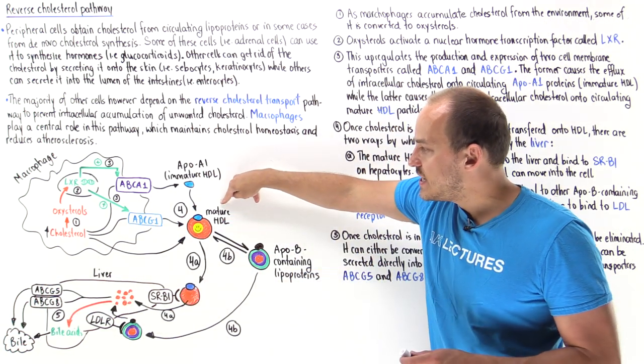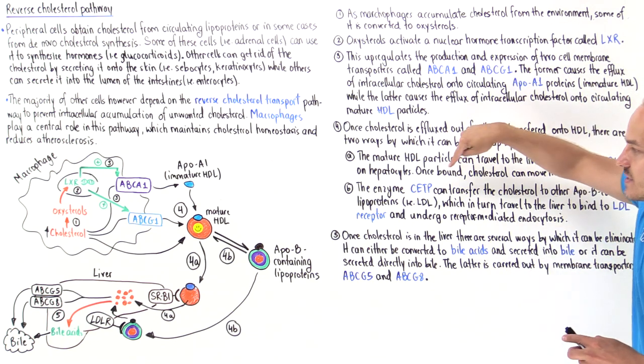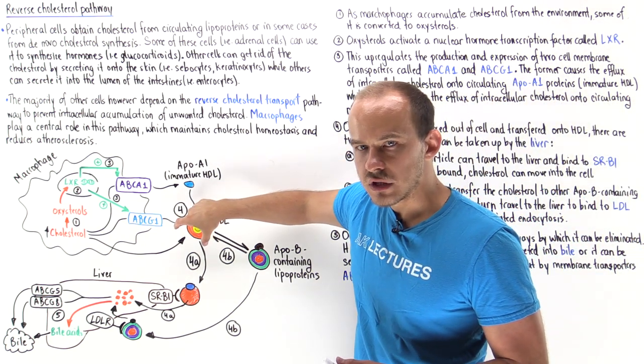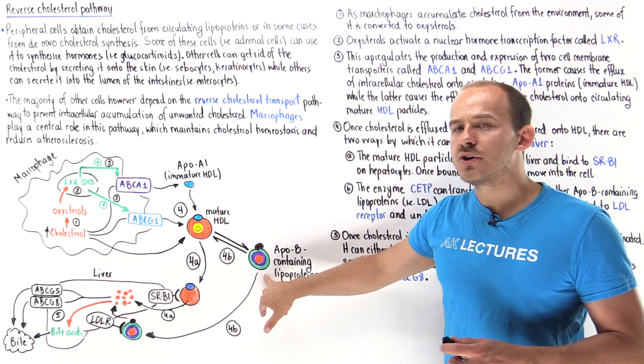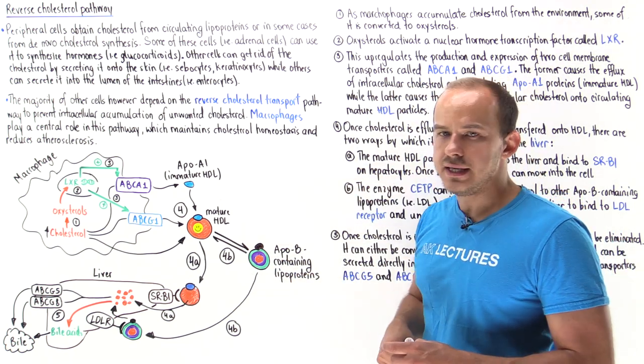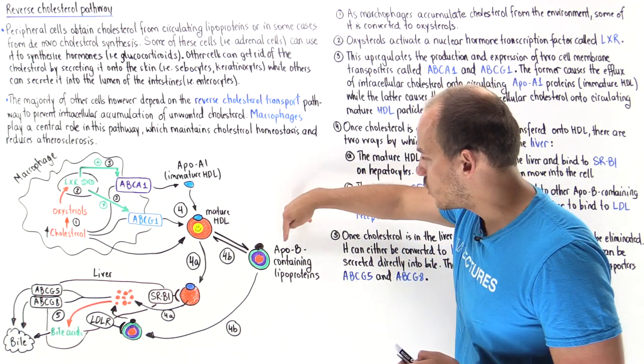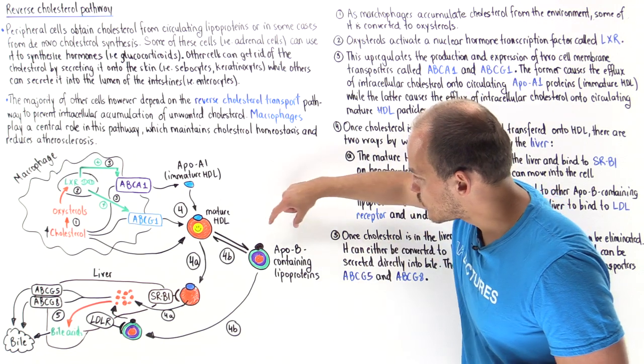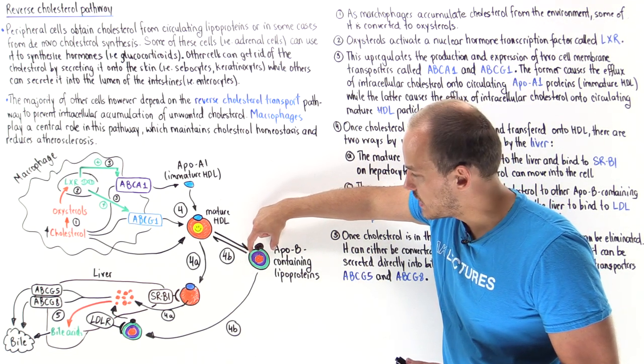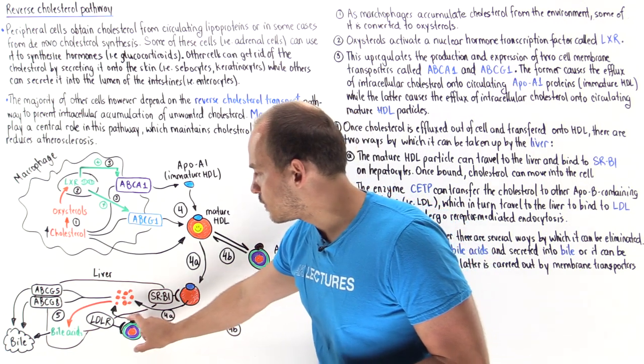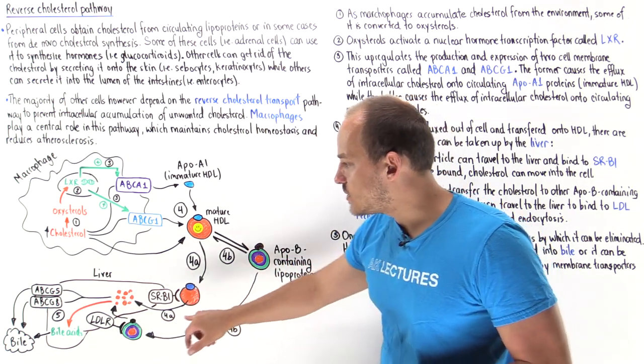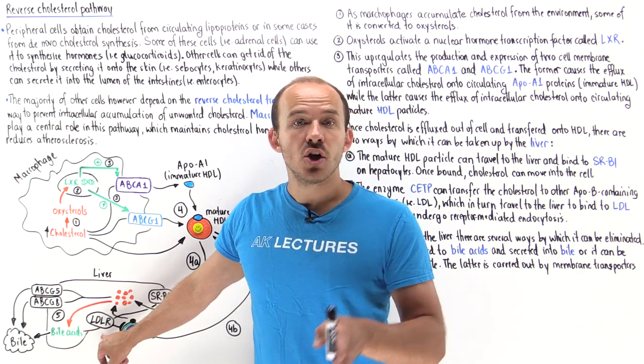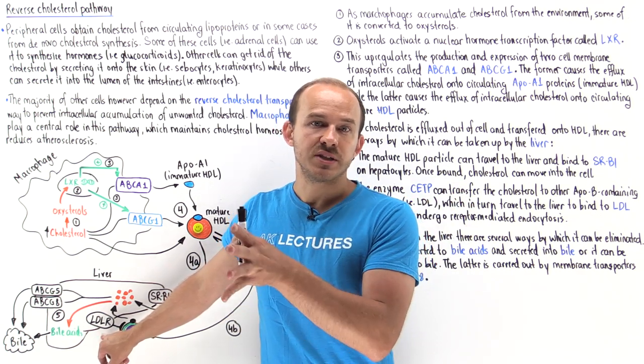Or these mature HDL particles, with the help of an enzyme known as CETP, can actually transfer the cholesterol esters onto other lipoproteins that contain APOB apolipoprotein—things like LDL and VLDLs. These other lipoproteins can then follow a similar pathway, but they associate with things like LDL receptors on the liver, and this mediates receptor-mediated endocytosis.